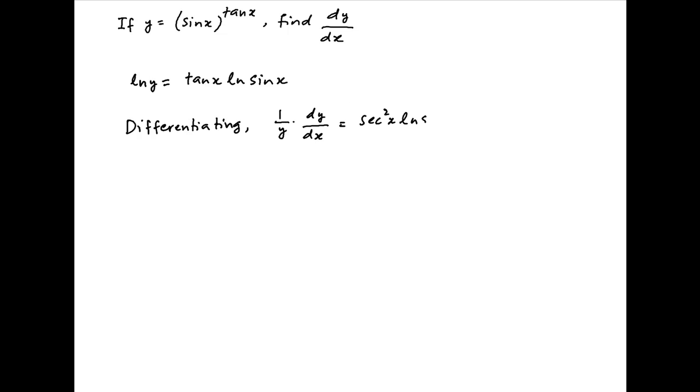On the right hand side, we get sec square x, which is the derivative of tan x, times ln sin x, plus tan x times the derivative of ln of sin x, which is cos x upon sin x.